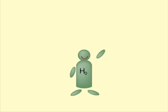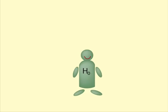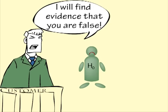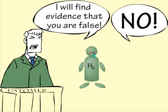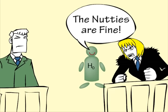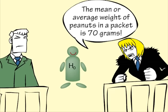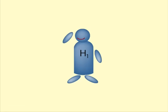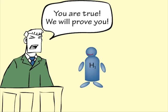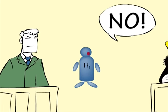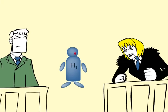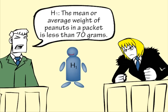The null hypothesis, often called H0, is the thing we are trying to provide evidence against. For Helen, the null hypothesis is that the choco-nutties are as they should be — the mean, or average weight of peanuts in the packet, is 70g. The alternative hypothesis, called H1 or HA, is what we are trying to prove. The customers have complained that the weight of peanuts is less than what it should be, so the alternative hypothesis is that the average weight of peanuts is less than 70g.